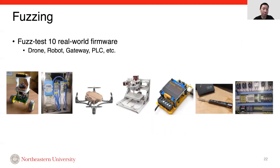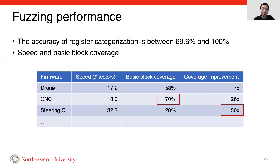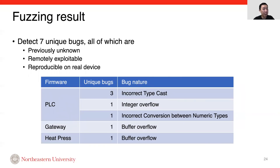We also fuzz tested 10 real-world firmware from devices such as drones and robots. The accuracy of register categorization on real-world firmware can reach 100%. The basic block coverage achieved is up to 70%. Compared to the vanilla emulator, which does not emulate any peripherals, the code coverage is improved by as much as 30 times. In our fuzzing campaign, we detected seven unique bugs. All the bugs are previously unknown and remotely exploitable. We also reproduced all the bugs on real devices to make sure they are not false positives introduced by our interface modeling mechanism.